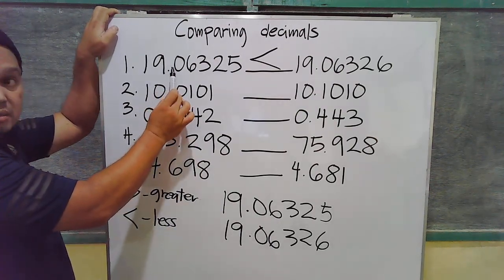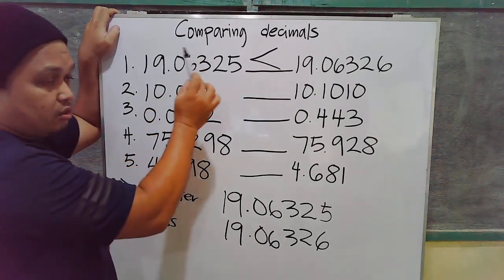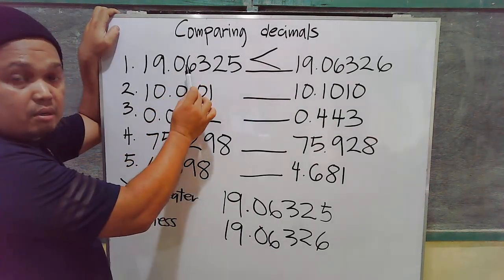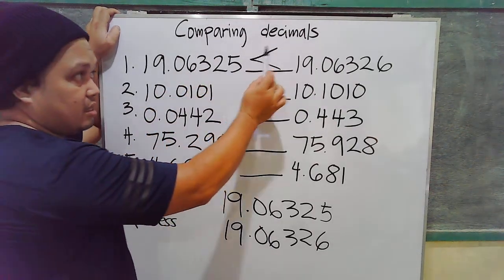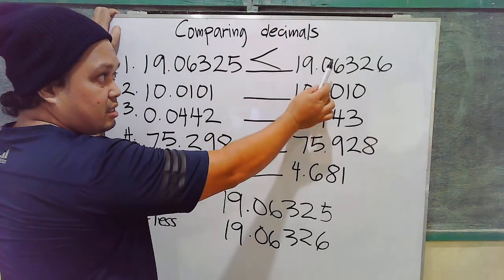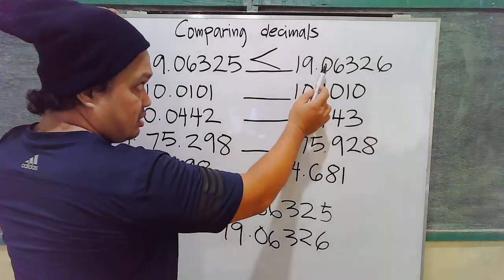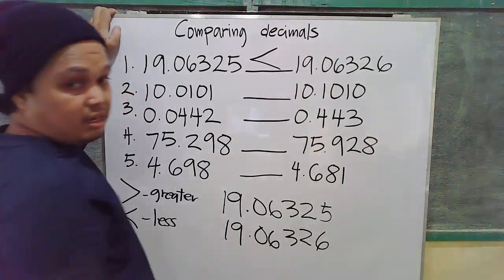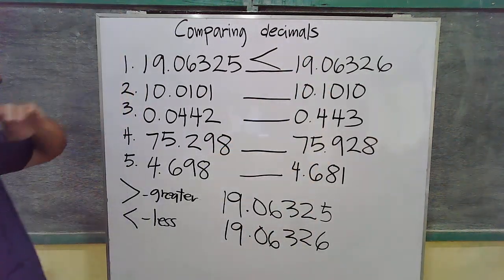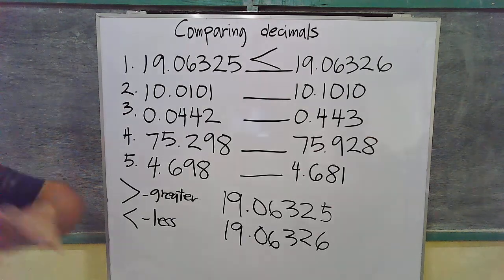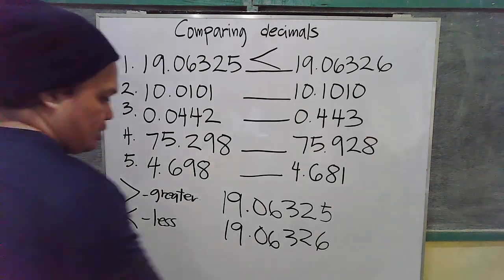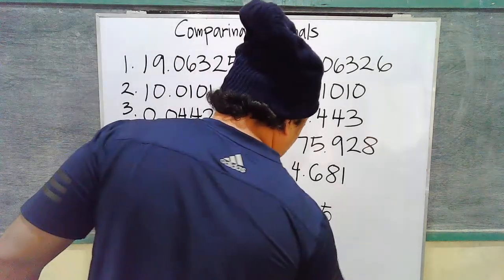Six is greater than five, therefore 19.06326 is greater than 19.01625. So 19.01625 is less than 19.06326. That's how you compare. Let's do number two.